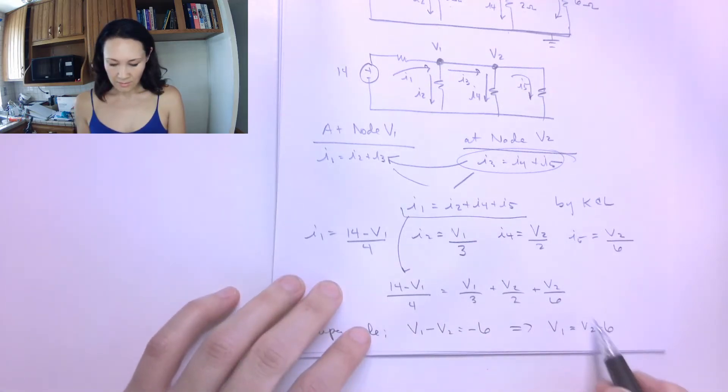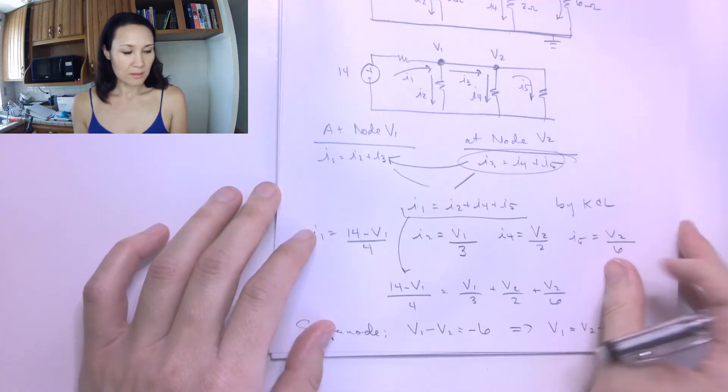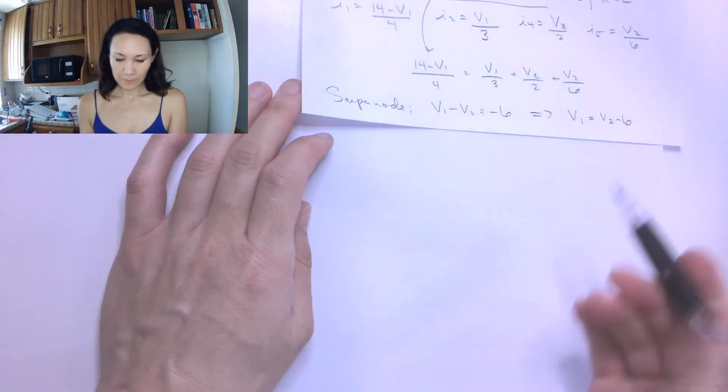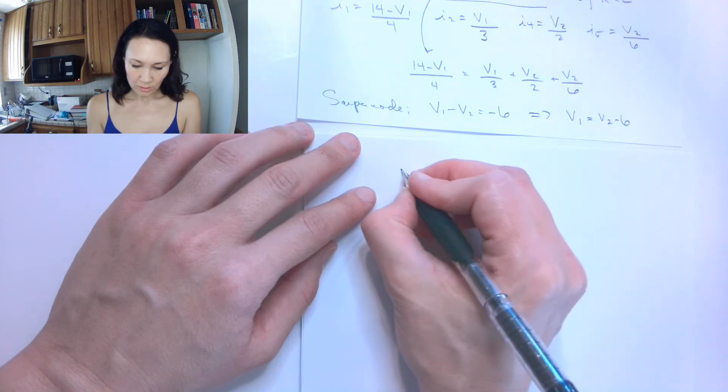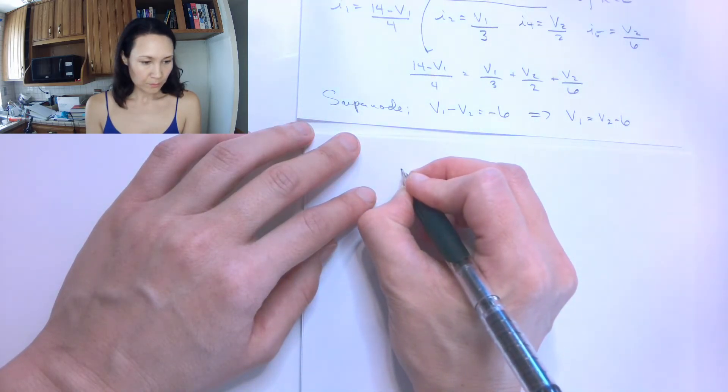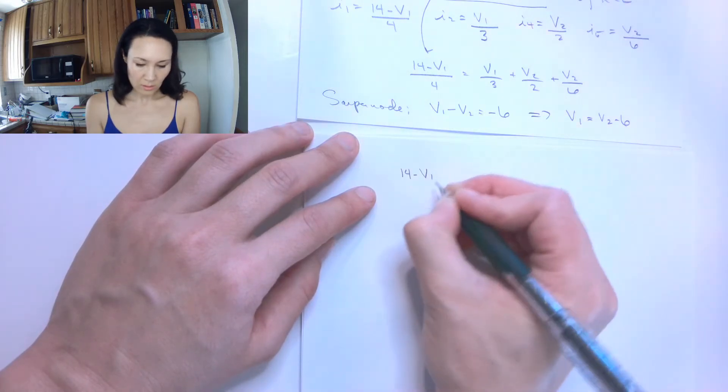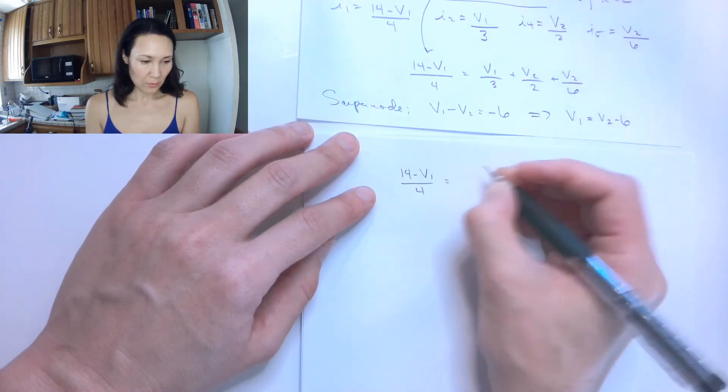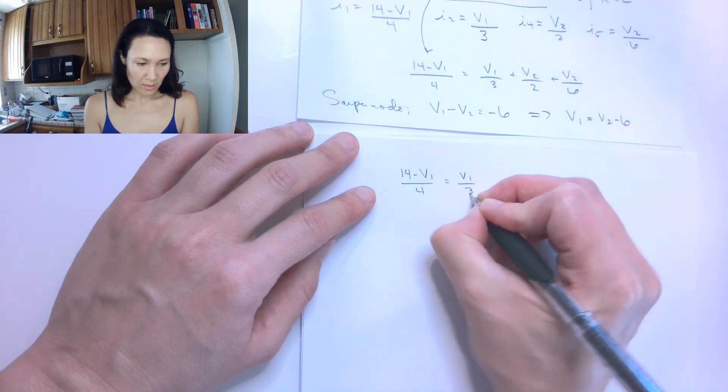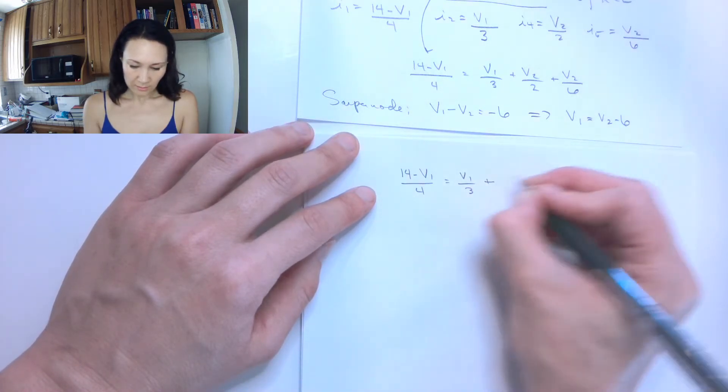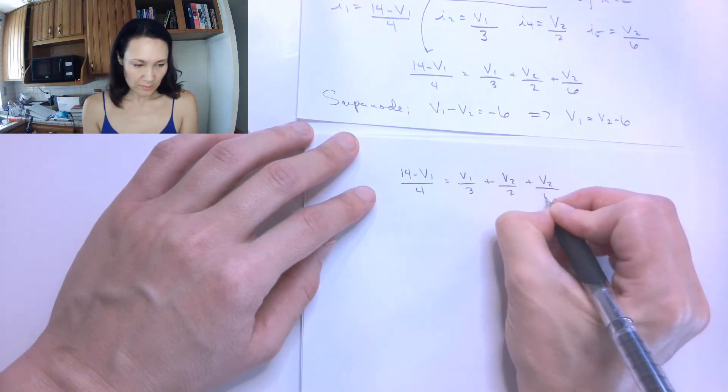And I can make a substitution everywhere I see a V1 in this equation up here. So let me do that. My node voltage equation was 14 minus V1 over 4 is equal to V1 over 3 plus V2 over 2 plus V2 over 6.